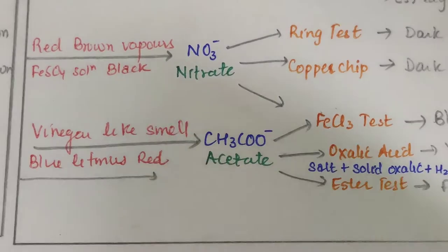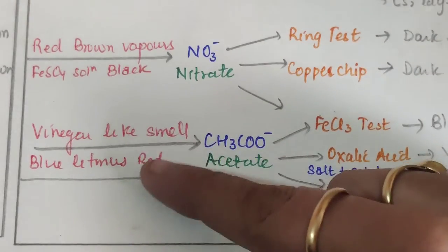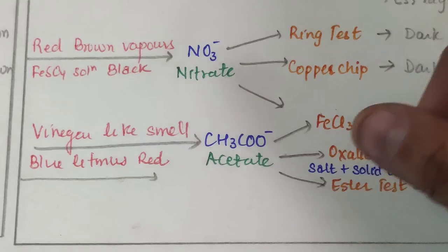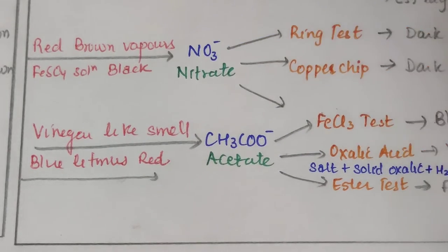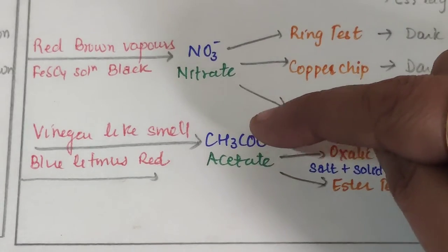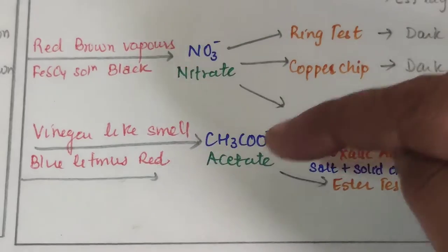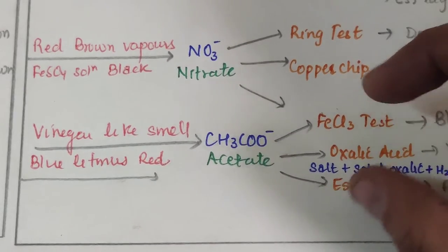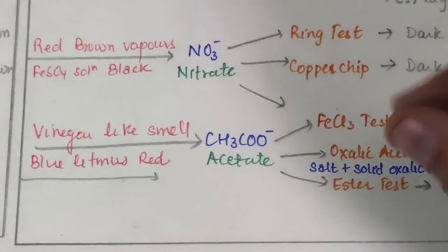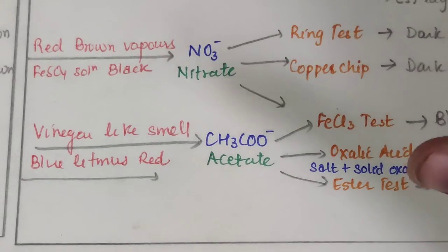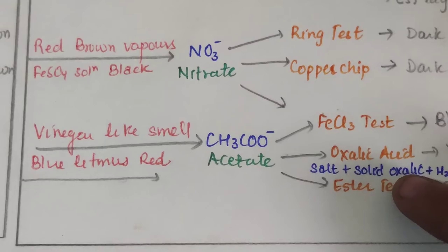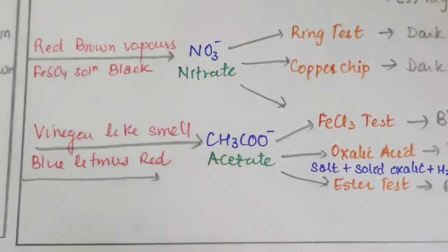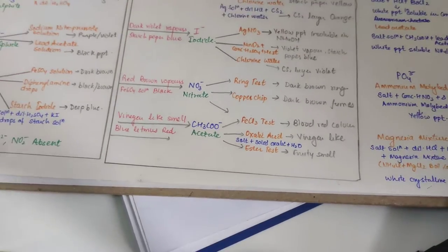For acetate: on adding concentrated H₂SO₄, a vinegar-like smell is obtained which turns blue litmus red. Two confirmatory tests: (1) FeCl₃ test — add FeCl₃ to the salt solution; if it turns blood red, acetate is confirmed. (2) Oxalic acid test — take a salt, add solid oxalic acid, add a few drops of water to make a paste and smell it — vinegar-like smell confirms acetate. Also, an ester test: add concentrated H₂SO₄ and a few drops of ethyl alcohol to the salt solution — a fruity smell confirms acetate.